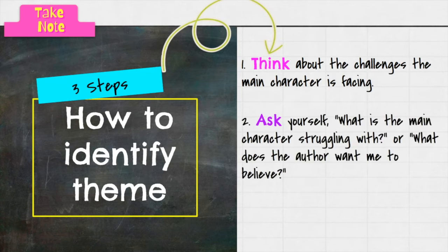And you ask yourself, what is the main character struggling with? And what does the author want me to believe? So again, in the Hunger Games, Katniss is struggling with the actual Hunger Games, like staying alive and doing what's right in the face of what's wrong, or what she believes is wrong, which is the actual Hunger Games.